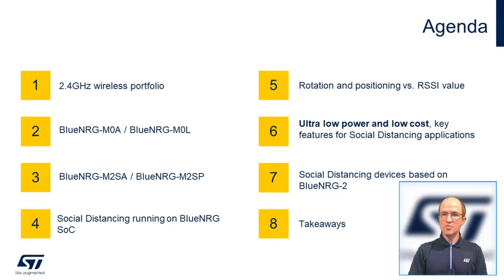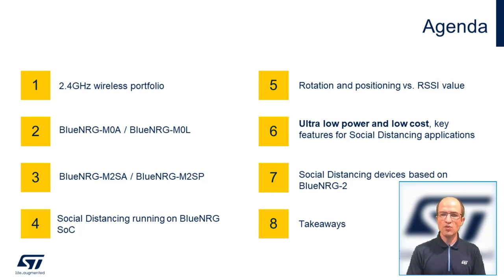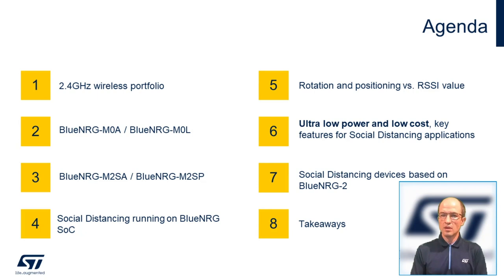Now let's review the agenda for today. We will begin with a brief update on our Bluetooth Low Energy product portfolio. After this, we will highlight the key features of our Bluetooth Energy M0 and M2 modules. Then we will talk about the need for social distancing and contact tracing applications based on Bluetooth LE to protect human health under today's challenges, and the way ST is helping in implementing this type of applications. We will also discuss the effect that rotation and positioning have over the RSSI value of the signal, and review how ultra-low power consumption and low cost are key features for social distancing applications. We will also mention some examples of contact tracing applications in the market today based on our Blue Energy Dash 2 SoC, and conclude with the takeaways of this webinar.